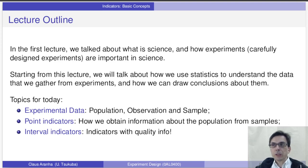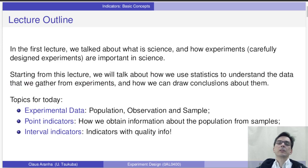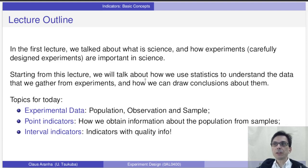Last week we talked about what is science and how we can use experiments to discover new information about the world. Starting from this lecture, we will study how to use statistics to analyze the data that we get from an experiment, and how to understand the conclusions from this experiment. In this week, I will talk about point and interval estimators, and how we can use them to explain data from an experiment. This is a very basic topic, but which will be very useful for the entire course.